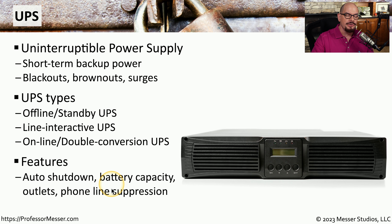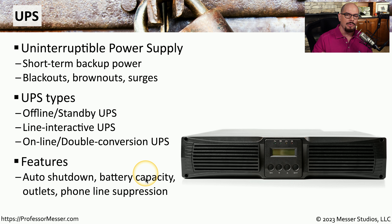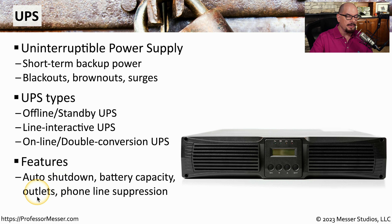There are also a number of different features you can get with a UPS. For example, you can choose how much battery capacity is in a particular UPS. If the battery gets low, the UPS can send signals to your systems to automatically shut them down gracefully before the battery is completely depleted. You also have choices over the number of outlets on the back of the UPS, and some UPSs include additional suppression features to plug in an ethernet or telephone cable.